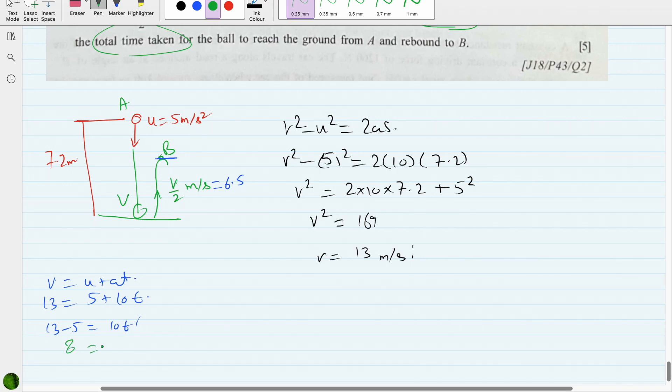8 = 10t, so t = 8/10, which is 0.8 seconds. So this is the time taken to fall. Let's say t₁ = 0.8 seconds. Now for the second half.